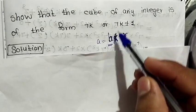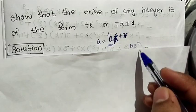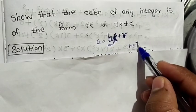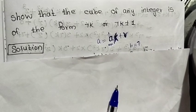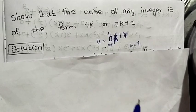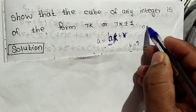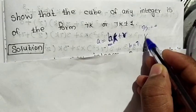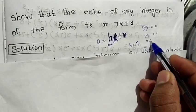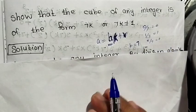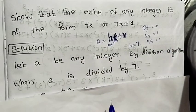We set b equal to 7. Since b is 7, we now consider the remainder r. The possible remainders when dividing by 7 are 0, 1, 2, and so on. When 0 is divided by 7, the remainder is 0. When 1 is divided by 7, the remainder is 1. When 2 is divided by 7, the remainder is 2.